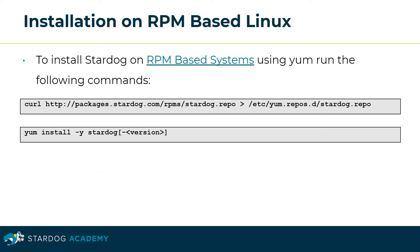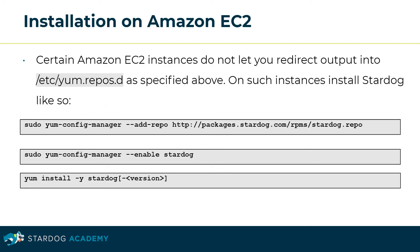To install Stardog on RPM-based systems using yum, run the following commands. Certain Amazon EC2 instances do not let you redirect output into /etc/yum.repos.d as specified above. On such instances, install Stardog using the following commands. This concludes the section about installation on Linux.